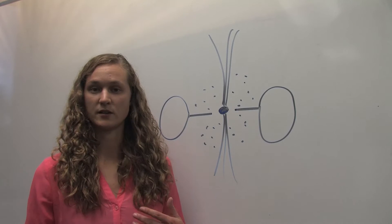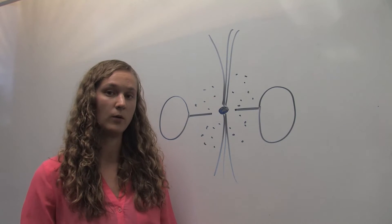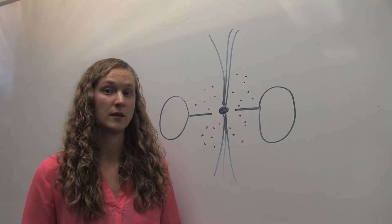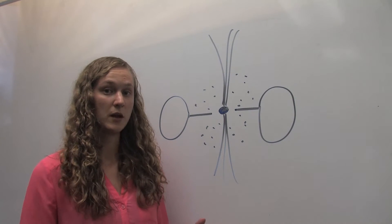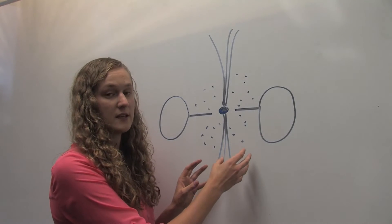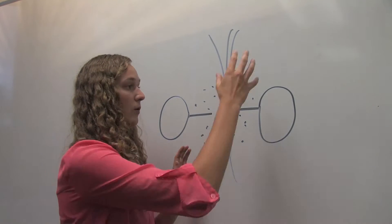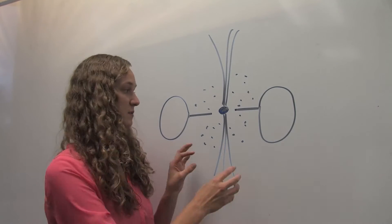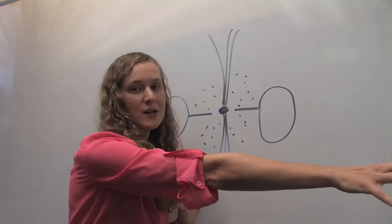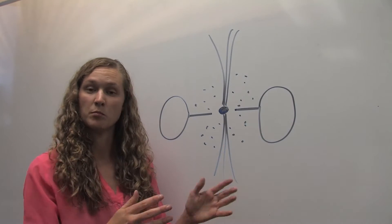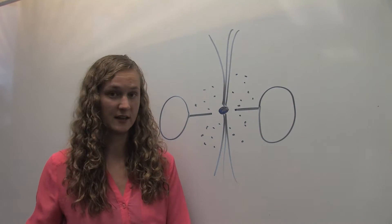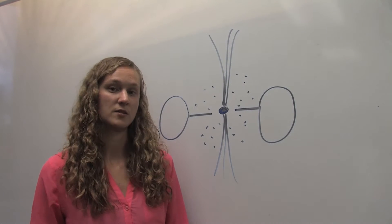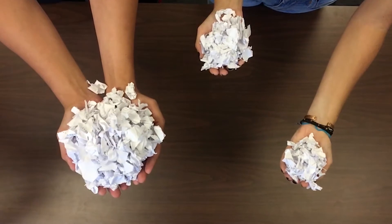Remember how I said we want to understand how the black hole and the rest of the galaxy affect one another? Well, scientists came up with the idea that maybe it's the outflowing material that links the black hole and the surrounding galaxy. Our group is trying to understand whether this material being blown out can actually reach the rest of the galaxy and blow out the gas, therefore preventing stars from being formed anymore — kind of like a hairdryer blowing away pieces of paper.